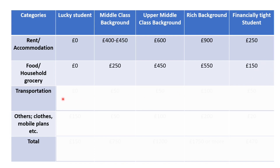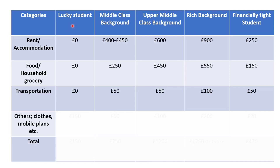Moving on to the third category: transportation. For the lucky student, the family drops them to university, so the figure is zero. For the middle class, most students travel to universities by bus, train, or ferry. The average monthly pass price would be around £50, and I've used £50 for the middle class, upper middle class, and financially tight students alike. For the rich background student, I've assumed they have a car, so I've included the cost of fuel and gas, taking the figure to £100.